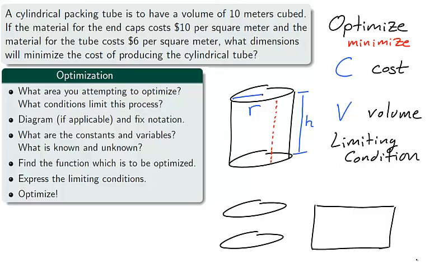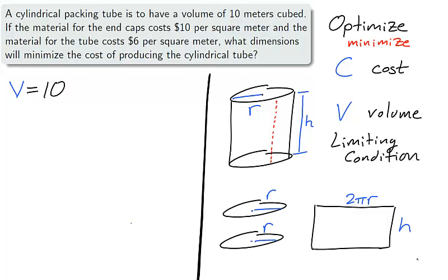Just imagine cutting the body of the tube height-wise and laying it out flat. We are interested in the total material used for the tube, that is, the area of the two circles and the rectangle. The dimension of each circle is radius r, while the dimension of the rectangle is h by 2πr. That is, the height of the tube and the circumference of the circles. Now the volume is fixed at 10 meters cubed, and since we are finding the volume of a cylinder, we have the equation πr²h equals 10.